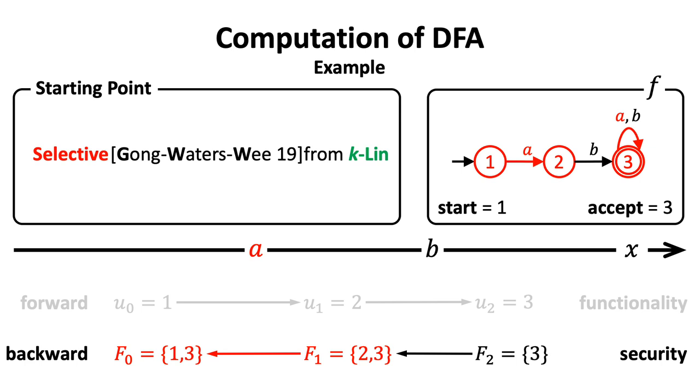There is also one possible state that will lead the machine to state 3, which is state 3 itself. So, the machine switches back to state 1 and 3 from current state 2 and 3.